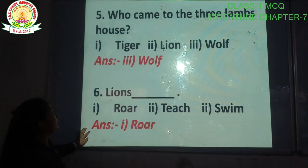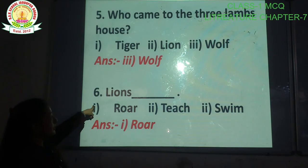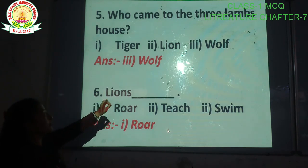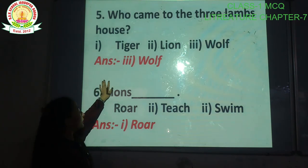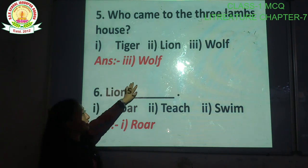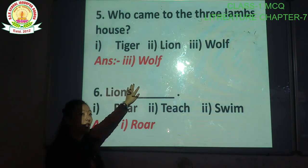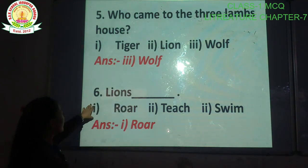Our next question is: who came to the three lambs' house? Teen lambs ke ghar mein kon aaya? Options: tiger, lion, wolf. The correct answer is option number three, wolf. Teen lambs ke ghar mein wolf aaya tha.